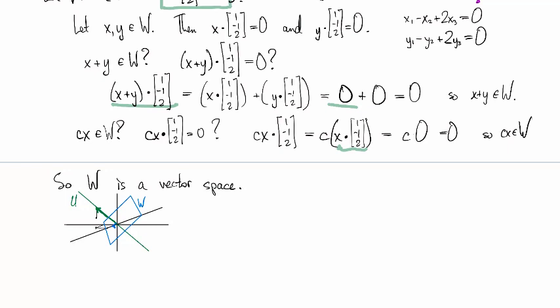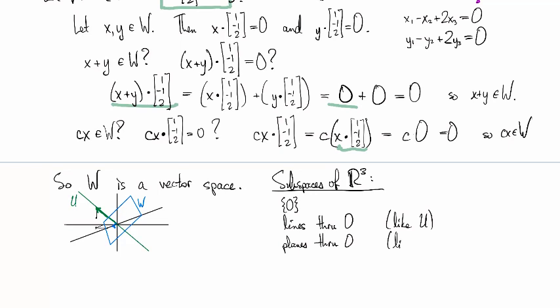And so the subspaces of R3 turn out to always look like this. We have 0, the trivial vector space. We have lines through the origin, like U. We have planes through the origin, like W. And all of R3 itself. That's the complete and total list of all subspaces of R3.